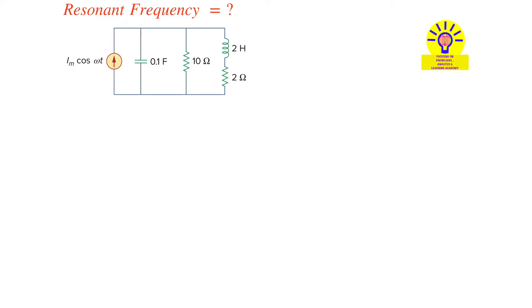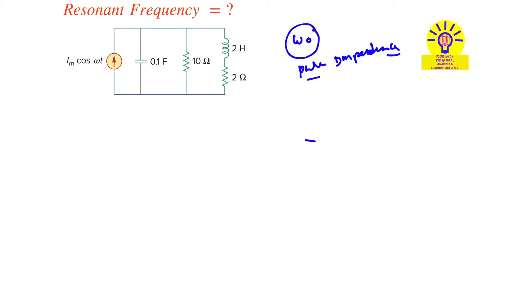First of all, what is the resonant frequency? At a certain frequency ω₀, the circuit acts as a pure impedance. What is that frequency and how can you find it? First, find the impedance of each branch.